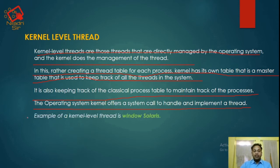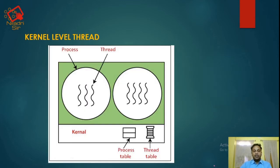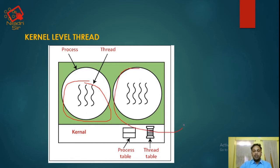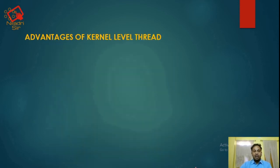An example of a kernel-level thread is Windows. In the pictorial representation of kernel-level threads, we can see the process with threads inside it. There is another process also consisting of multiple threads. This is the kernel with the process table and thread table.